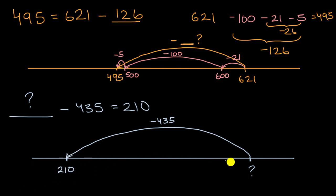So to figure out blank, we could go the other way around. We could start at 210 and then just add 435. So what's 210 plus 435?